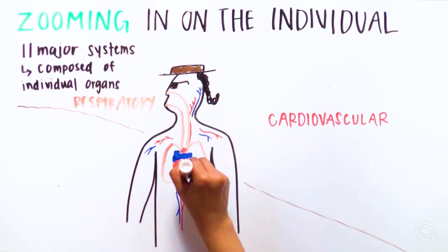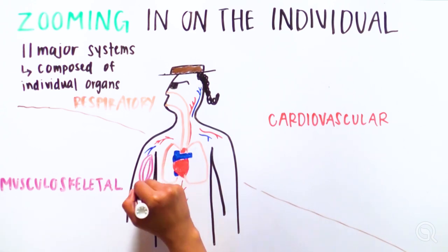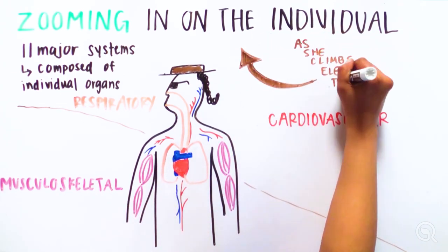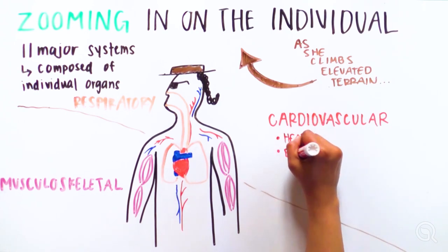Each body system has a structure of organs that work together to carry out functions. As she climbs elevated terrain, her cardiovascular system works to increase her heart rate.